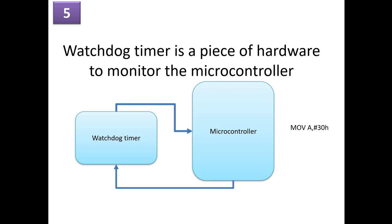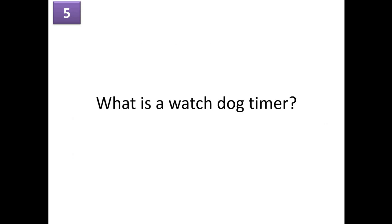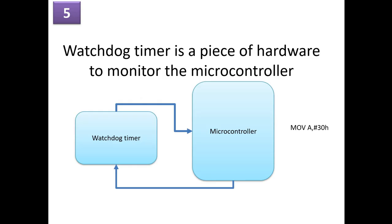What is a watchdog timer? A watchdog timer is a piece of hardware to monitor the microcontroller actions. For example, suppose a microcontroller is trying to execute the instruction MOV A, 30H, and it takes approximately one microsecond to execute this instruction. If the microcontroller gets stuck executing this instruction, then the watchdog timer will reset the microcontroller.